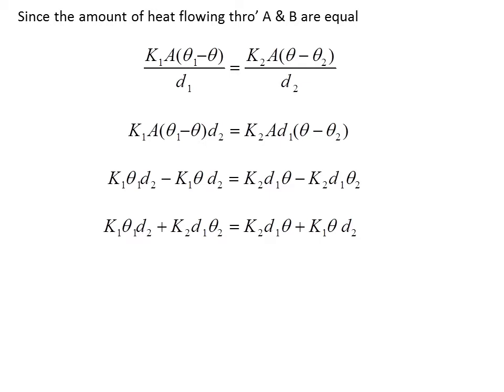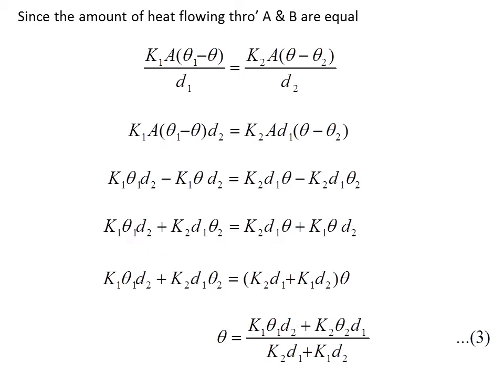Here, theta is common on the right-hand side, so it can be factored out. You will get (K2·D1 plus K1·D2) times theta on the right-hand side. Therefore, theta equals (K1·theta1·D2 plus K2·D1·theta2) divided by (K2·D1 plus K1·D2).